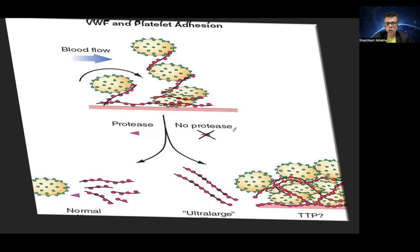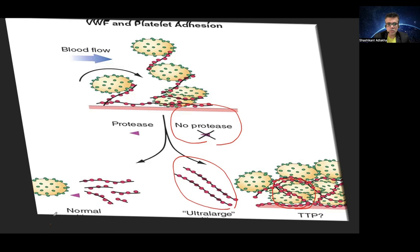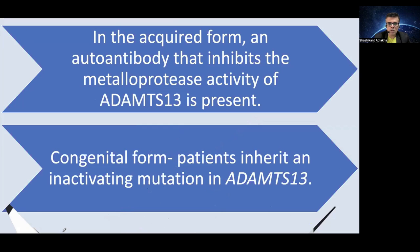In this picture, you can see that von Willebrand factor should normally be cleaved by the protease ADAMTS13, but in TTP there are no proteases, and that gives rise to ultra-large polymers of von Willebrand factor. This causes the persistent adhesion of platelets to the endothelium, so platelets keep on getting adhered to the endothelium for a longer period of time, generating thrombus formation.